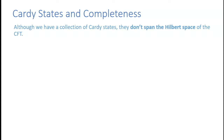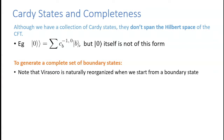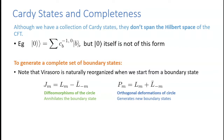Although we have a collection of Cardy states, they don't actually span the full Hilbert space of the CFT. To generate a complete set of boundary states, the Virasoro algebra is naturally reorganized starting from a boundary state rather than a primary operator. I define operators J_M — diffeomorphisms of the circle that annihilate the boundary states — and an orthogonal set of deformations P_M. These P_M operators act on boundary states and generate new states, forming an algebra where the holomorphic and anti-holomorphic Virasoro algebras no longer commute but form a semi-direct product.